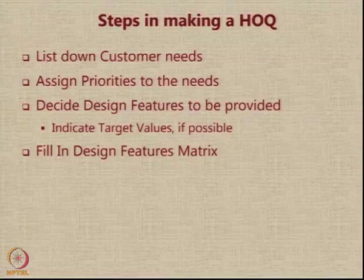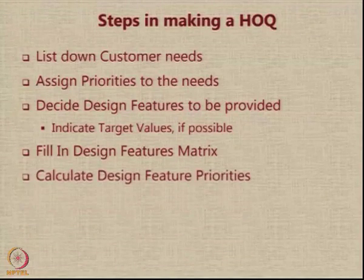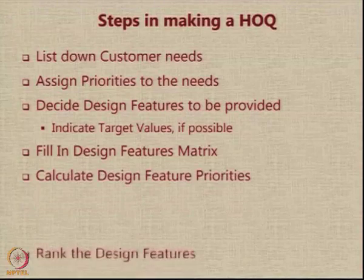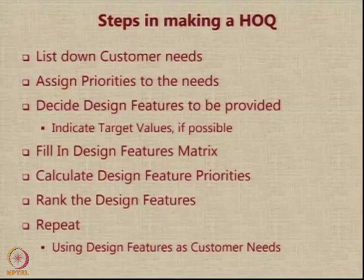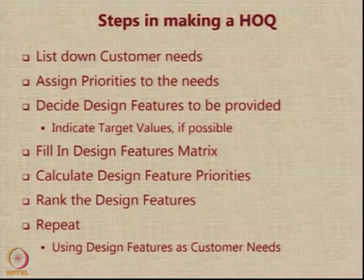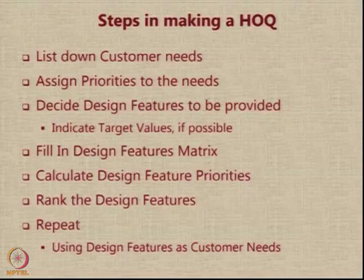The next step is to fill in the design features matrix. You calculate the design feature priorities and then rank the design features. When you rank them, if some feature has got a very poor score, you may decide to drop it altogether, because it does not really affect the improvement of the design much. Or you might use most of the design features and add some more features, then use them as the requirements and repeat the whole process. It goes on cyclically.